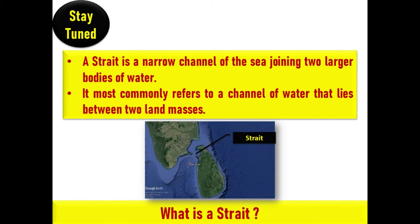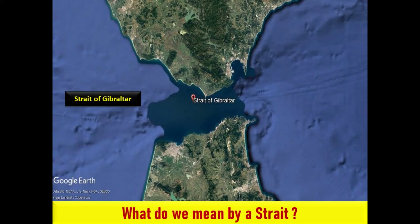First of all, let's see what is a strait. A strait is a narrow channel of the sea joining two larger bodies of water. It most commonly refers to a channel of water that lies between two land masses. A strait is a naturally formed, narrow, typically navigable waterway that connects two larger bodies of water. It is used for international navigation through the territorial sea, and straits used for such navigation are subject to the legal regime of transit passage.